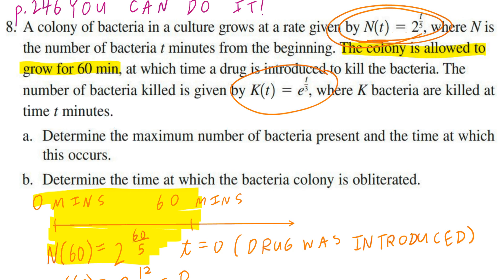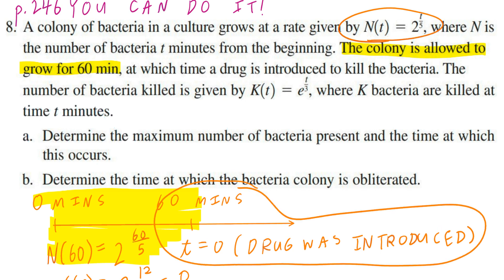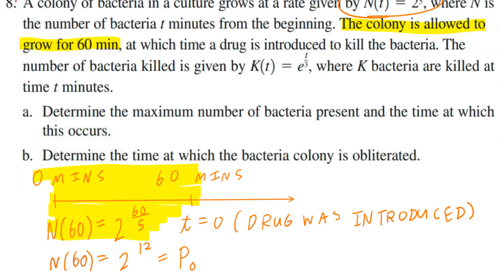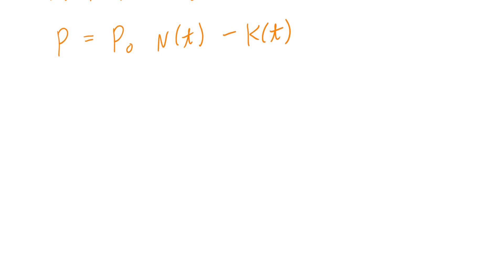You have to understand this happens in the same timeframe. In the first 60 minutes, we let the population grow up to 2 to the power of 12 bacteria. That's why I drew a timeline. The moment the drug is introduced, I set this as time equal to zero. Think about pressing play from 0 to 60 minutes — the population grows to 2 to the power of 12. So P of t equals 2 to the power of 12.